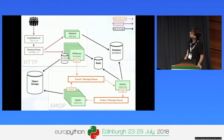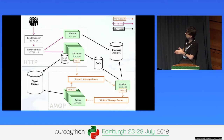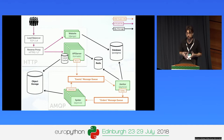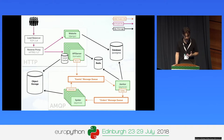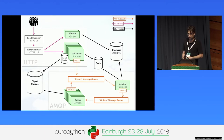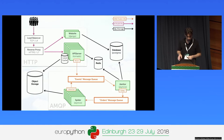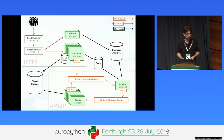The user-facing service is pretty standard: there's a load balancer that sends traffic to a Django website handling marketing, user accounts, API keys, and billing, and also to an API server written with Tornado — not really modern but really fast. The API server serves images as fast as it can; whenever an image is missing it sends a miss event to a RabbitMQ message queue, and a service called Janitor picks it up.